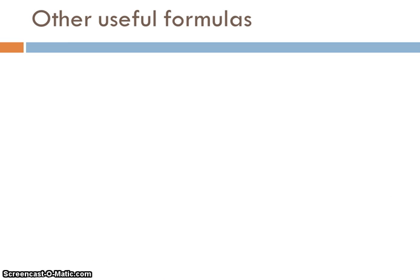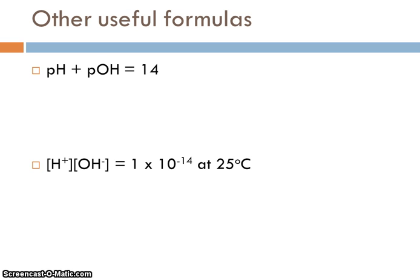Some other equations or formulas that you might find handy. The sum of the pH plus the pOH are going to add up to 14 for a solution in water at 25 degrees Celsius. Similarly, the concentration of the hydroxide ion times the concentration of the hydronium ion is equal to 1 times 10 to the minus 14, again at 25 degrees Celsius. This is the KW expression from the autoionization of water. Again, very handy equations, and again, equations I recommend that you memorize.